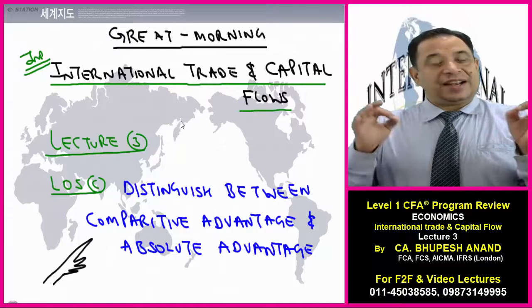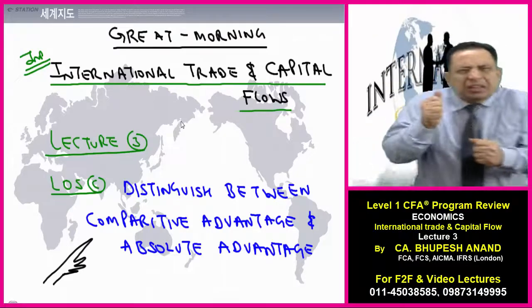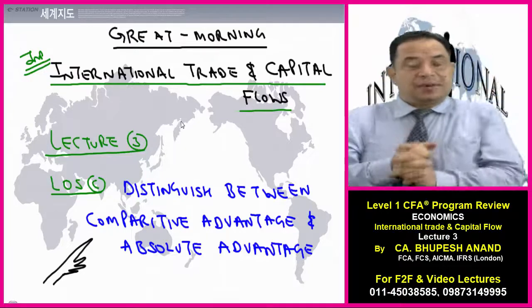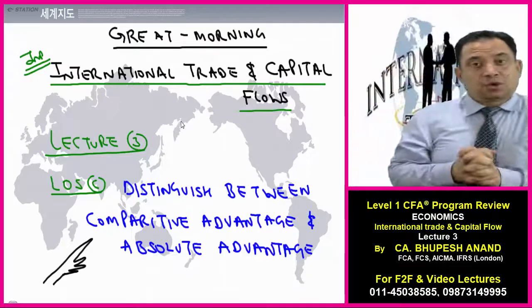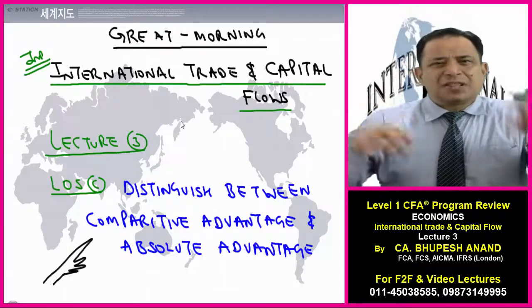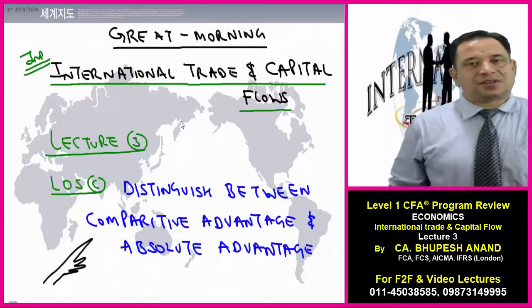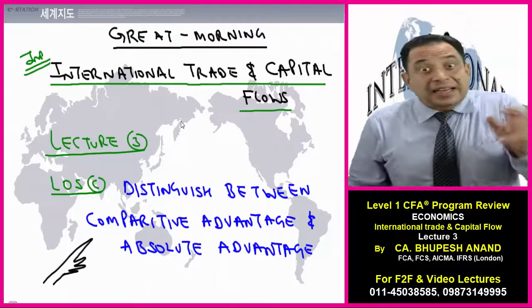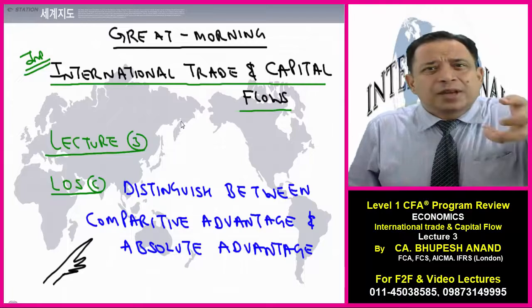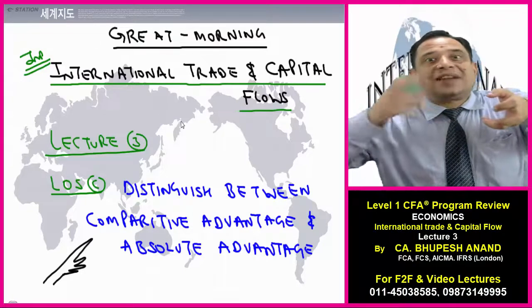We have covered two lectures in international trade and capital flows. The most important reading — the most testable reading for your CFA Level 1 examination. Today we will be starting with learning article C: what is the difference between absolute advantage and comparative advantage. It is highly testable in the examination, so please be attentive, be patient, and put in 100% today because it has some tricks on how to calculate relative advantage.